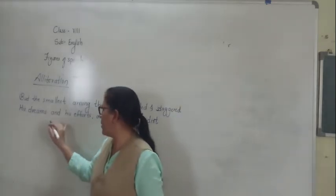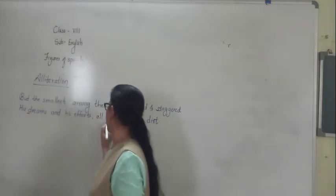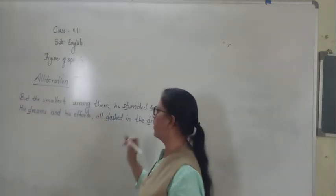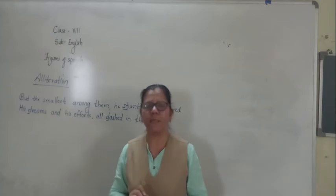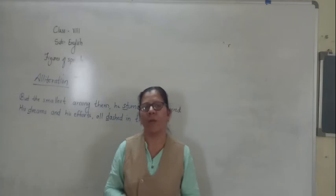Next, his dreams and his efforts are dashed in the dirt. Dreams, dashed, dirt - the 'd' sound is repeated. So these are the examples of alliteration used in the poem.